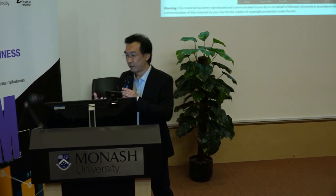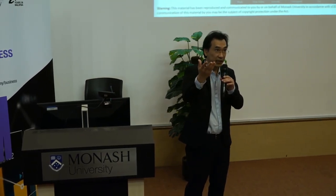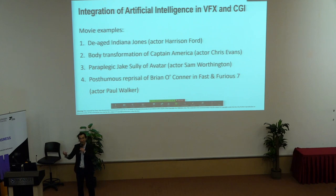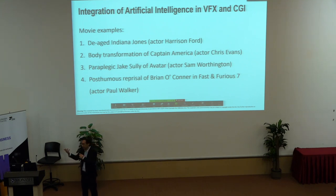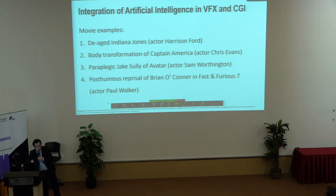Today, Photoshop has started to incorporate AI to improve the realism of photos. In movies, there's integration of artificial intelligence in visual effects and computer-generated interfaces. For example, in the latest Indiana Jones movie, they de-aged actor Harrison Ford. In Marvel's Captain America, they did a body transformation. In Avatar, they made actor Sam Worthington — who plays Jake Sully — appear paraplegic, though in reality he's able-bodied. And there was a posthumous reprisal of Brian O'Connor in Fast and Furious 7, where they brought a deceased actor back to reprise his role.